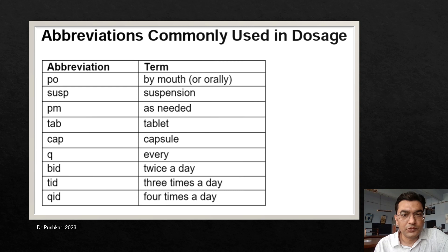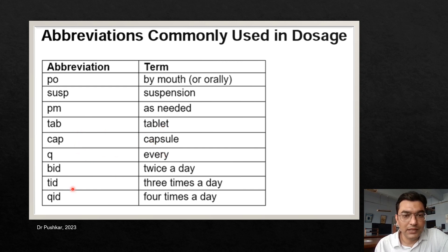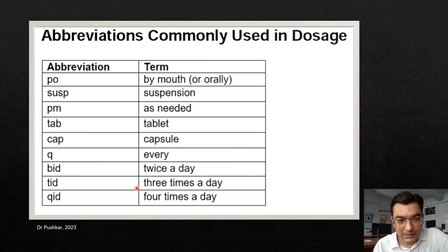These are the most common abbreviations found in doctors' prescriptions: PO means per oral or by mouth, SUSP is suspension, PRN means as needed, TAB is tablet, CAP is capsule, Q means every, BID means twice a day, TID equals 3 times a day, and QID equals 4 times a day.